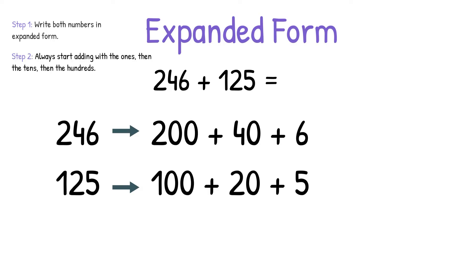Step 2 is always start adding with the ones, then the tens, then the hundreds. So we're going to add 6 plus 5 equals 11, 40 plus 20 equals 60, and 200 plus 100 equals 300.